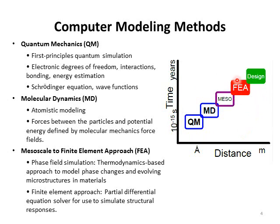All these modeling methods vary with length and time. This class only focuses on quantum mechanical simulation. This method is based on the Schrodinger equation and wave functions. We can use this method to study electronic degrees of freedom, atomic interactions, bonding, and energy estimations. We can also study structures, properties, and the performance of materials using quantum mechanical simulations.